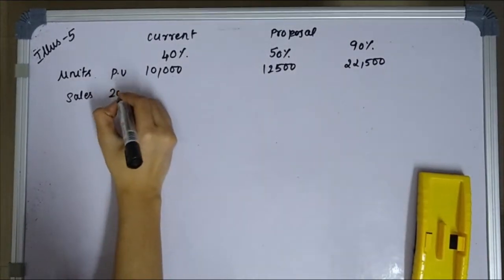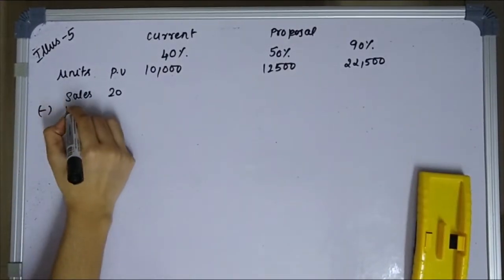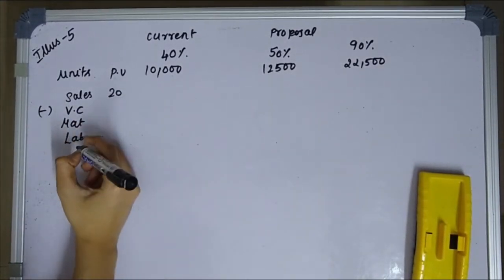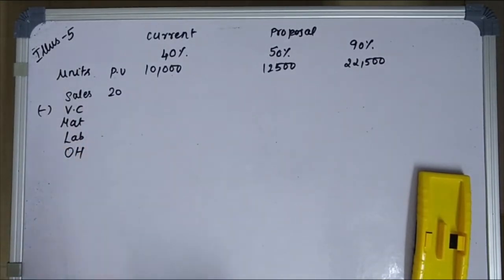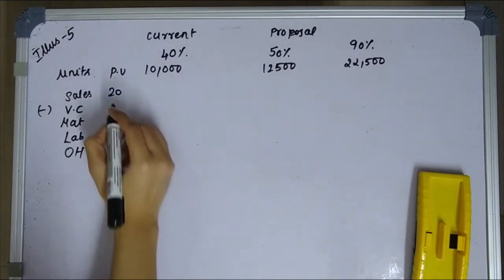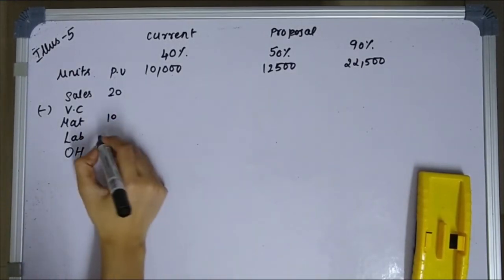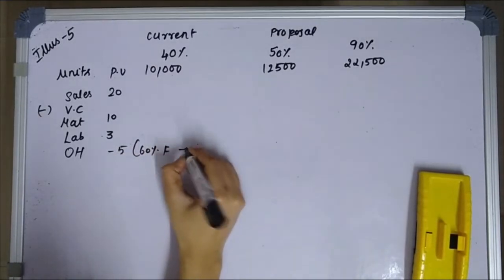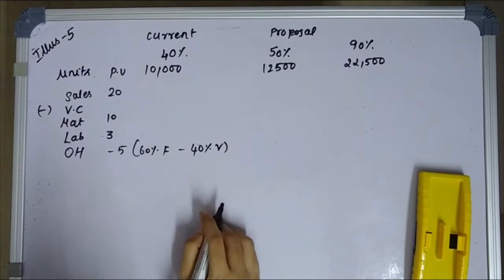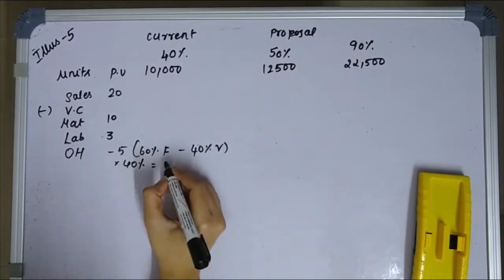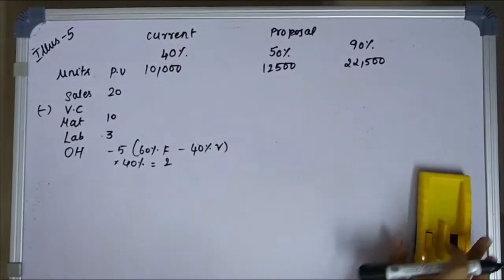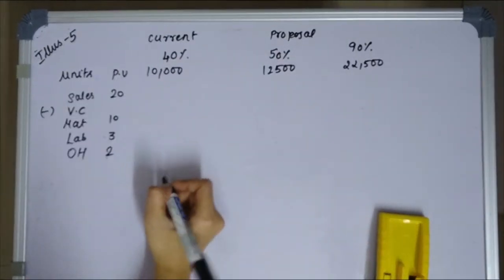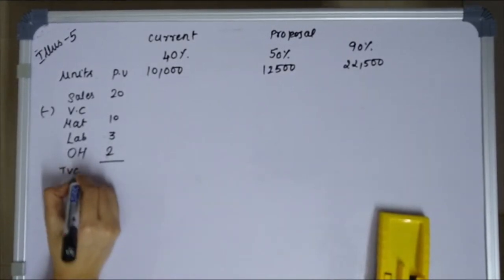Variable cost breakdown per unit: material is 10 rupees, labor is 3 rupees, overhead is 5 rupees of which 60% is fixed and 40% is variable. So 40% of 5 rupees gives you 2 rupees variable overhead. Total variable cost per unit is 15 rupees.